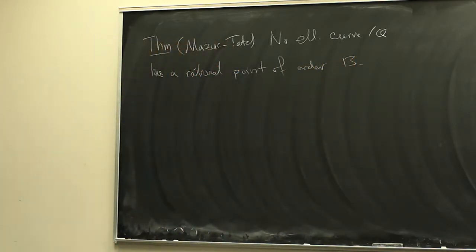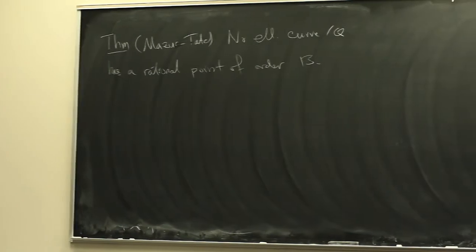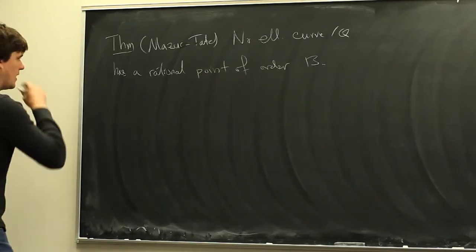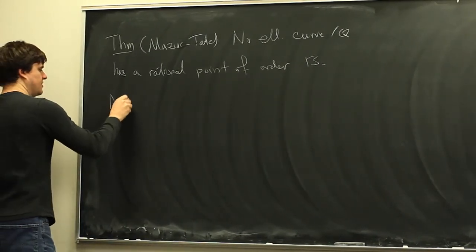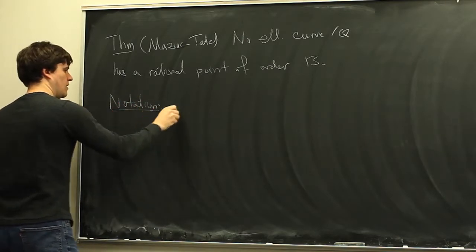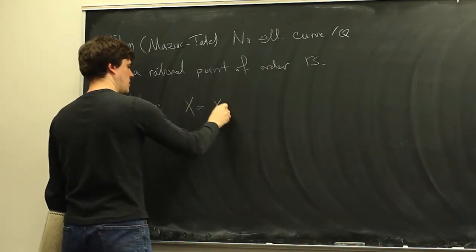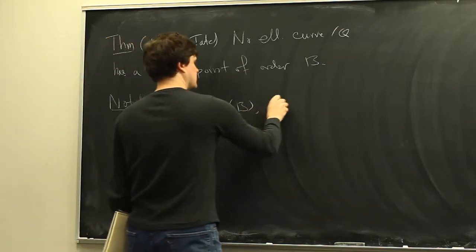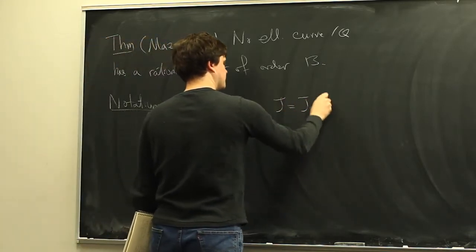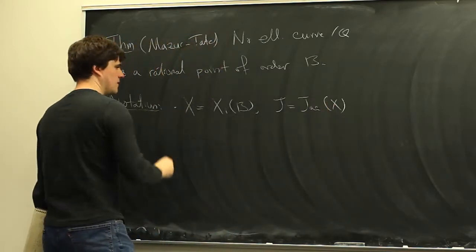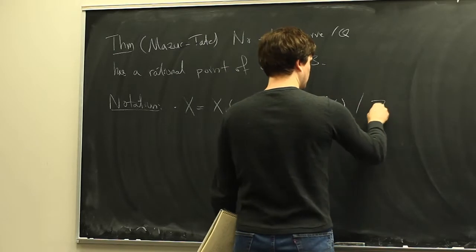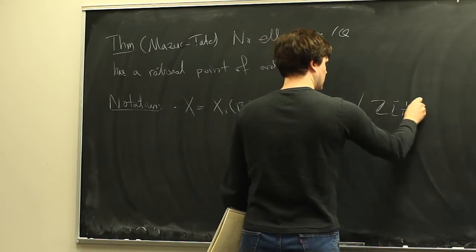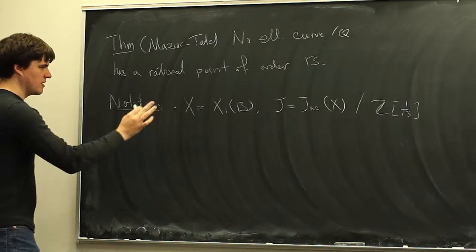This was the one prime order that Mazur's method missed because X₀(13) has genus 0. Some notation: I'm going to write X for X₁(13). We're trying to show that curve doesn't have any rational points except for the cusps. J is going to be the Jacobian, and these will always be over Z adjoined 1 over 13 — we're never going to need to consider it in bad characteristic, but we will think about it integrally a little.